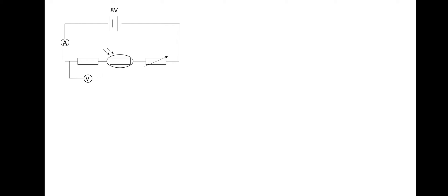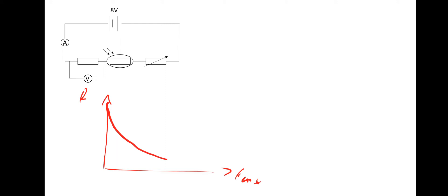First thing is to sketch a graph of resistance against light intensity. Nice and simple — same shape graph as the thermistor one, just different values. I'll use lux for light intensity, and it's the same shape curve. More light, less resistance.